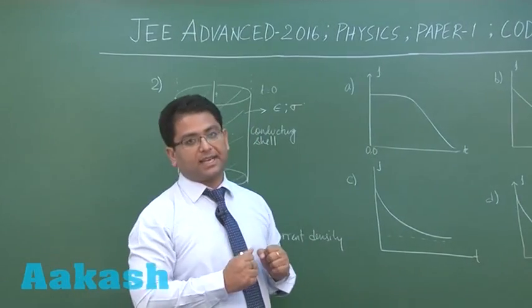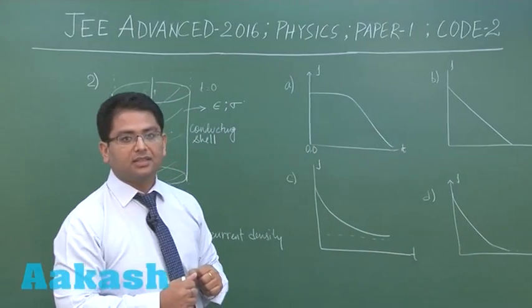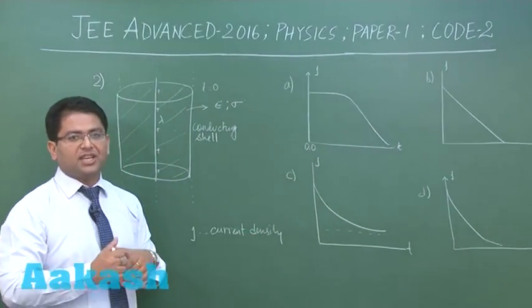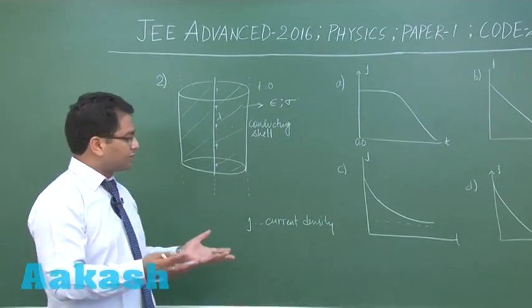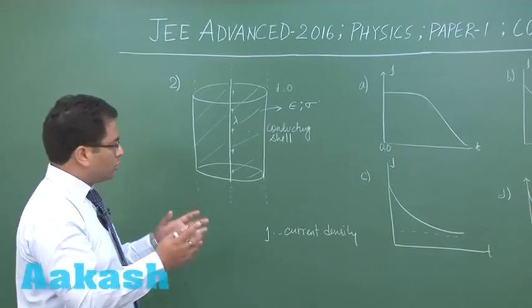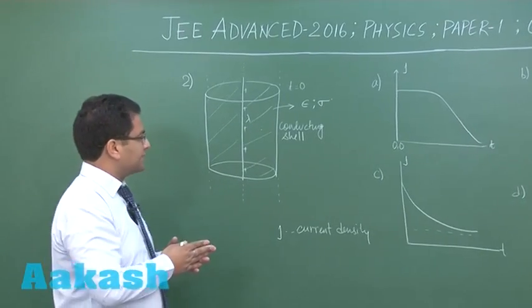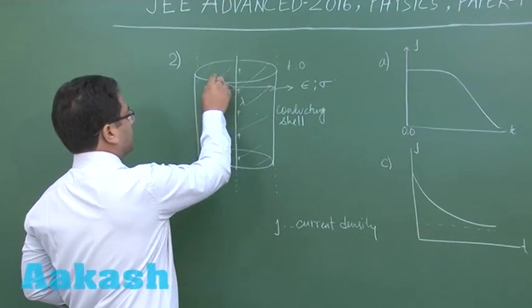J would be changing because this is not the case of steady current. The current is manifested in the form of a discharging circuit. Look at the analogy with the RC discharging circuit - quite obviously you would be having current streaming in this particular way.